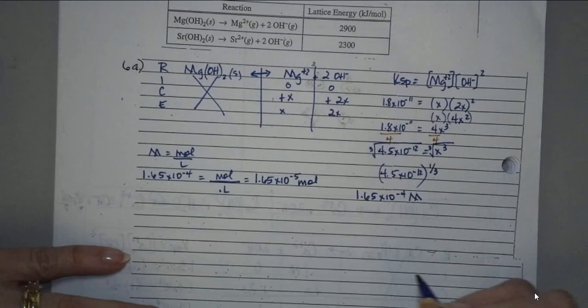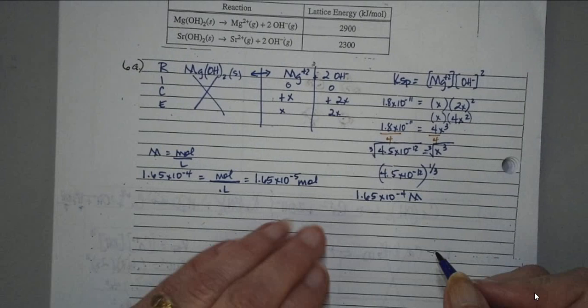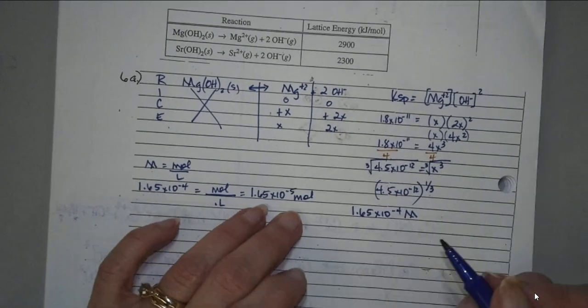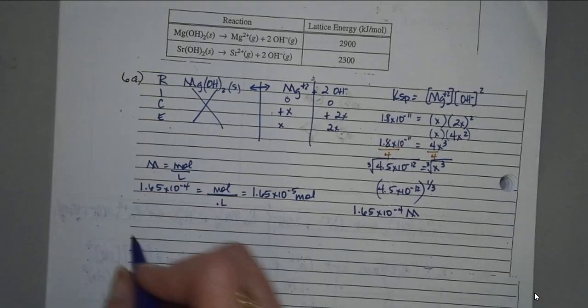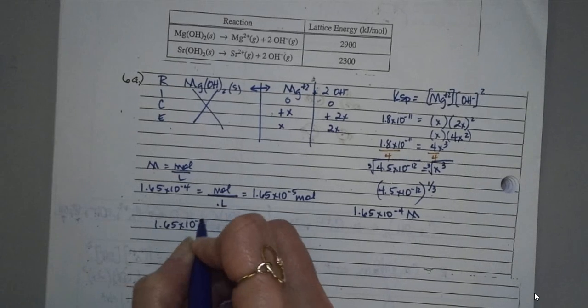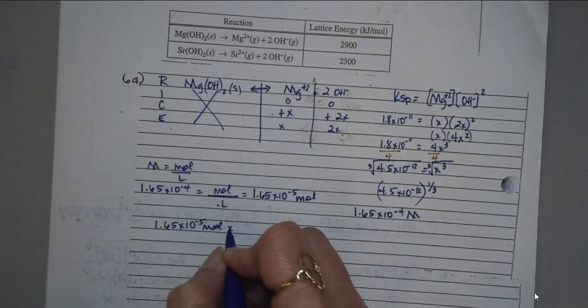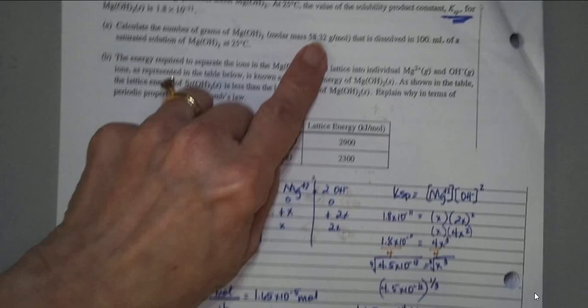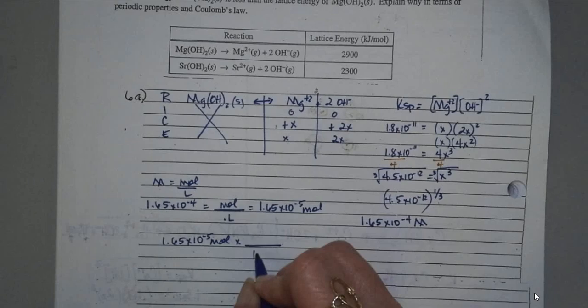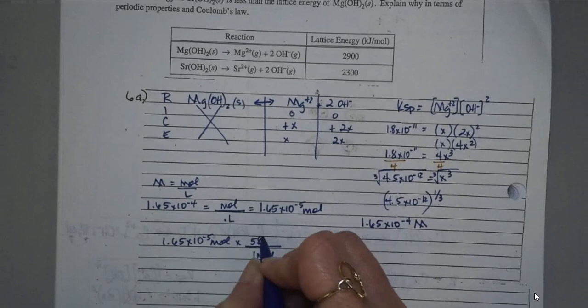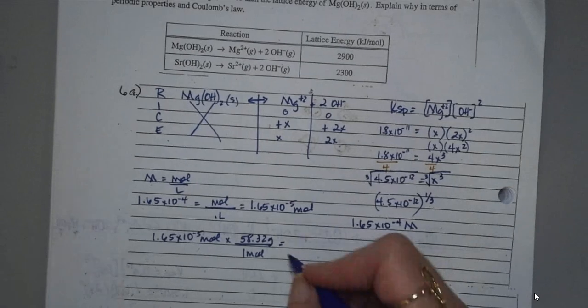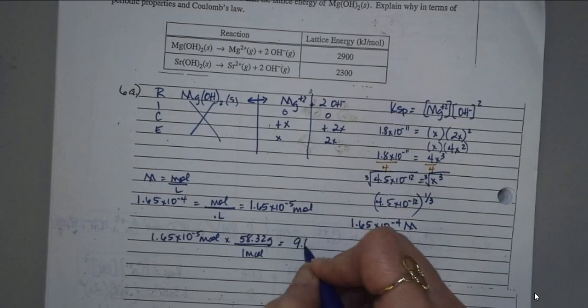Do they want our answer in moles? No. They want it in grams. Do you know how to change moles to grams? Yes. So we've got 1.65 times 10 to the negative 5 moles of magnesium hydroxide. They gave you the molar mass here. So for every 1 mole, it's 58.32 grams. And you guys should have got 9.6 times 10 to the negative 4 grams.